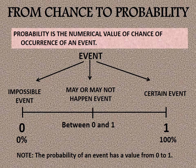Now we convert the chances of occurrence of an event to probability. When we talk about chances verbally and then represent it by a number, it becomes probability. Probability is the numerical value of the chances of occurrence of an event. An impossible event is 0%, which means the probability of an impossible event is 0.